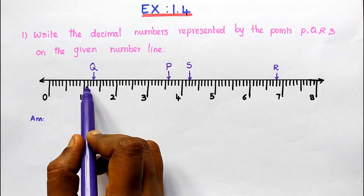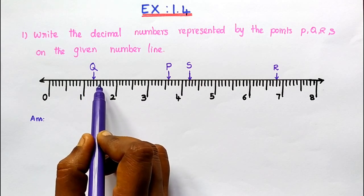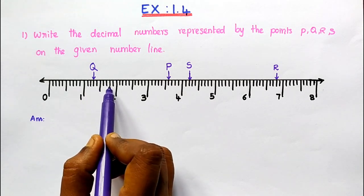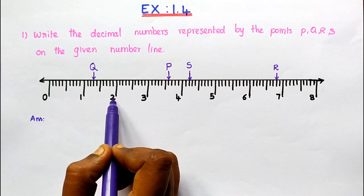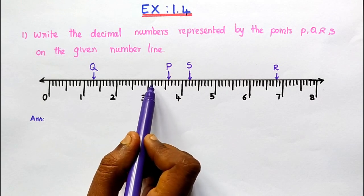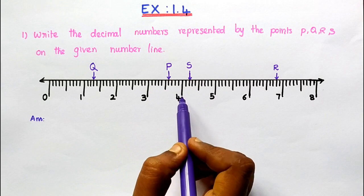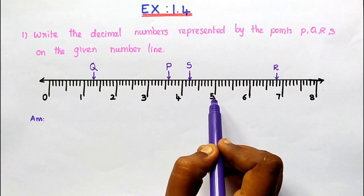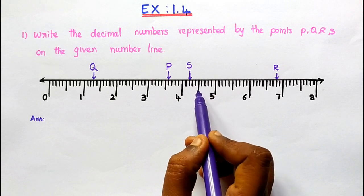After that: 1.1, 1.2, 1.3, 1.4, 1.5 — this long line is 1.5 — 1.6, 1.7, 1.8, 1.9, and then 2. After 2: 2.1, 2.3. And then after 3: 3.1, 3.2. After 4: 4.1, 4.2, 4.3. In between 4 and 5, there is a long line — that is 4.5. So this procedure we have to follow to represent the points.